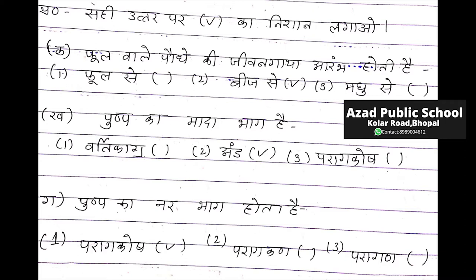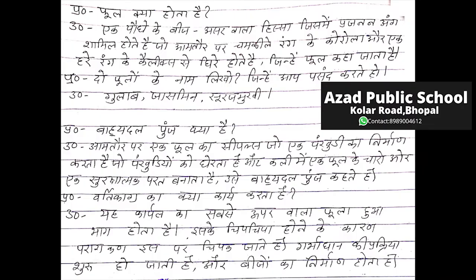Prashna: Phool kya hote hai? Uttar: Ek podhe ka beech wala asar wala hissah, jisme prajnan ang shamil hote hai, jo aam tawar par chamkile rang ke korola aur ek haray rang ke kyaliks se ghiray hote hai, unhye phool kaha jata hai.